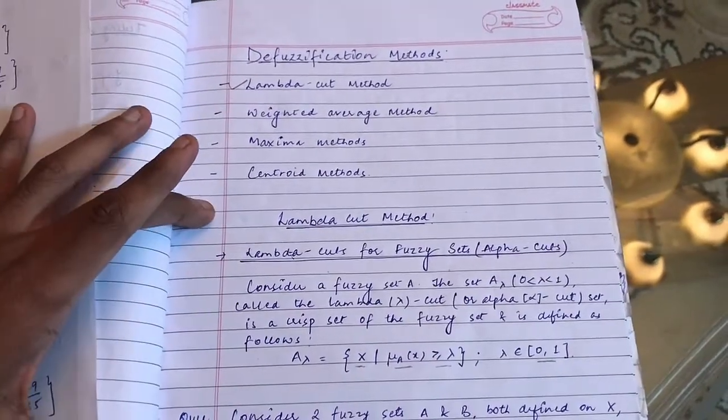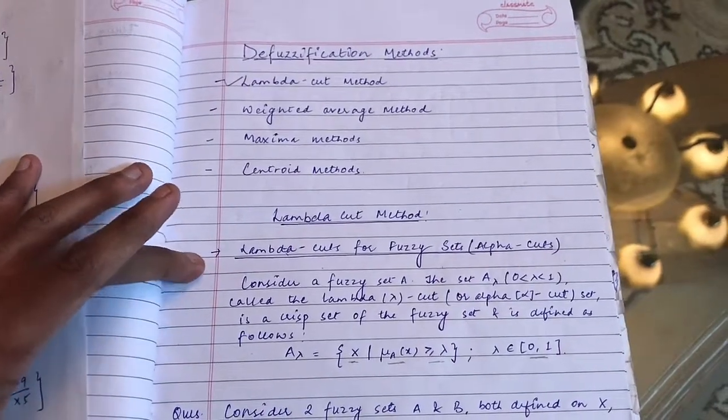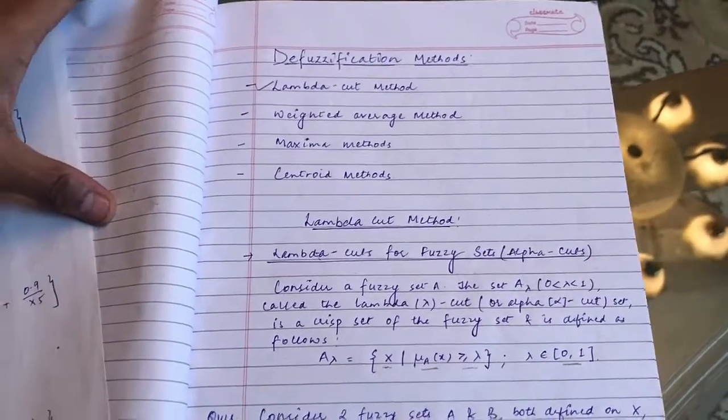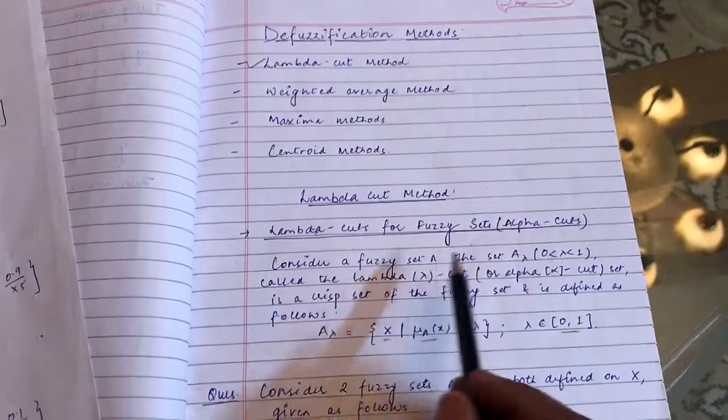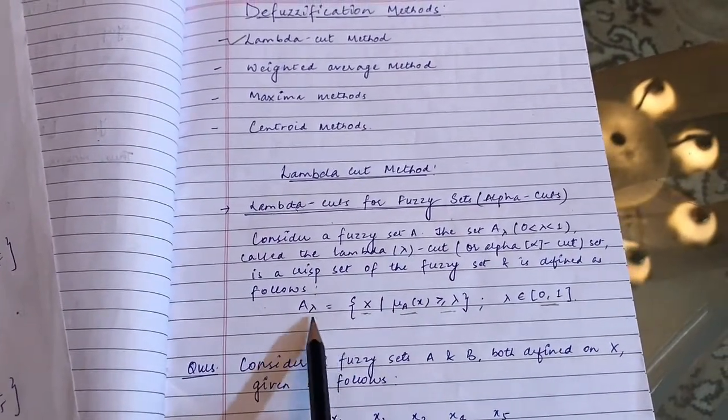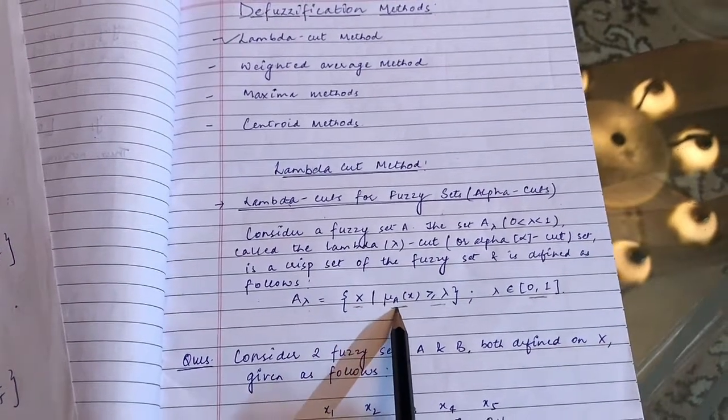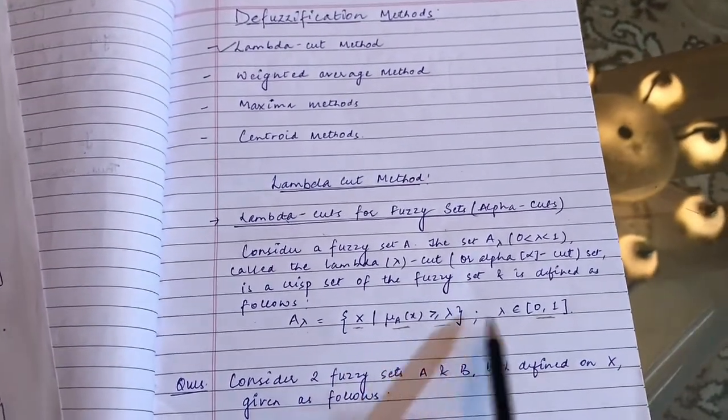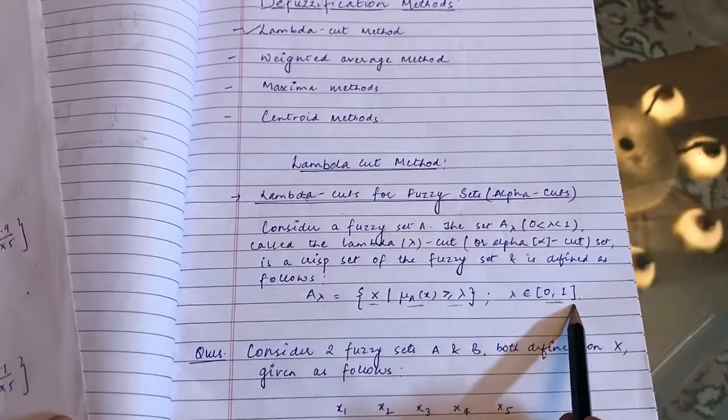In lambda cut method we have two things: lambda cuts for fuzzy sets and lambda cuts for fuzzy relations. For fuzzy sets, lambda cut A equals x, but we take only those values of x for which the membership function is greater than or equal to lambda, where lambda value lies between 0 to 1.